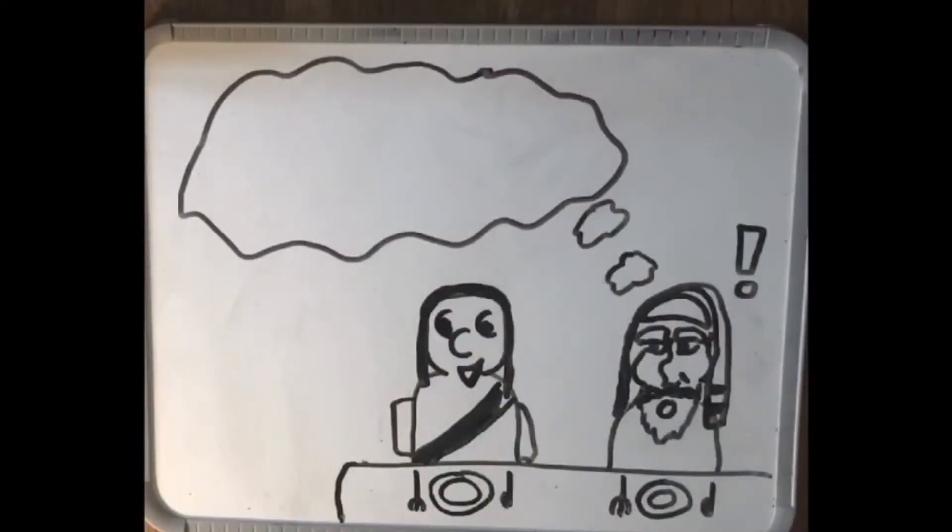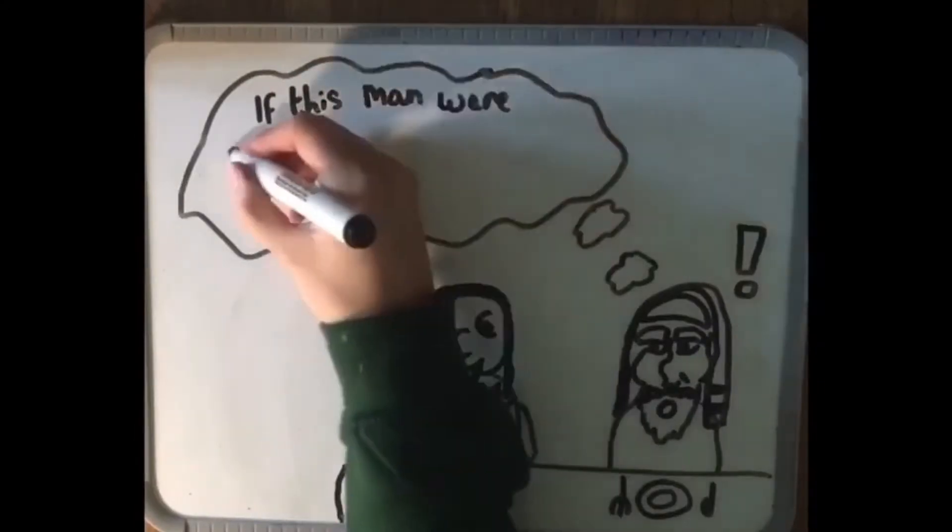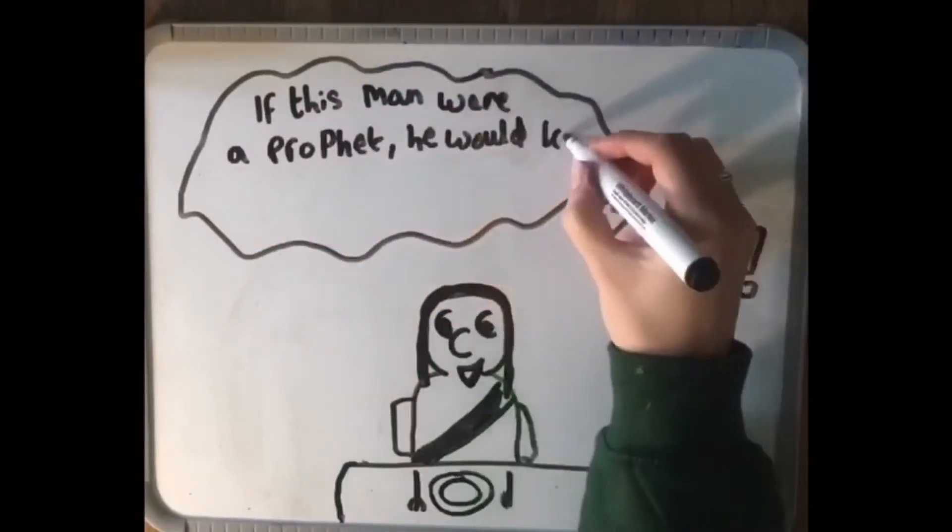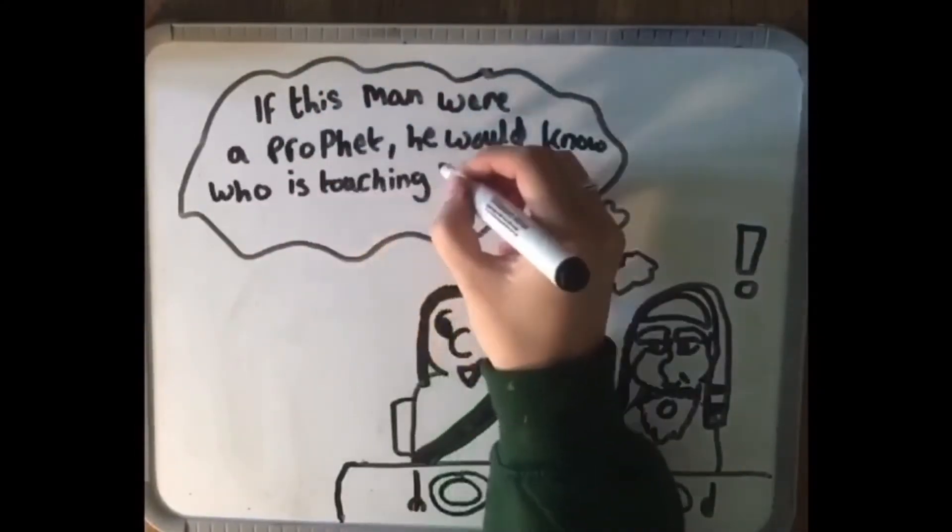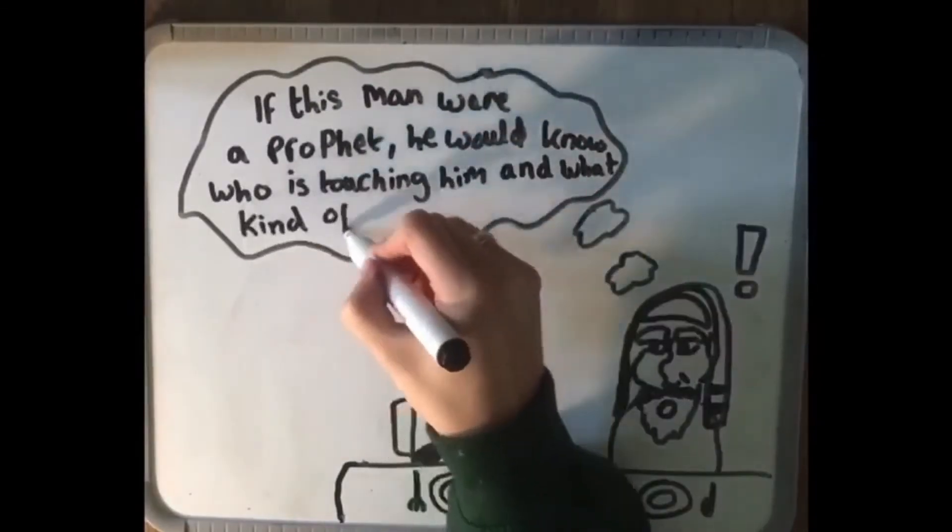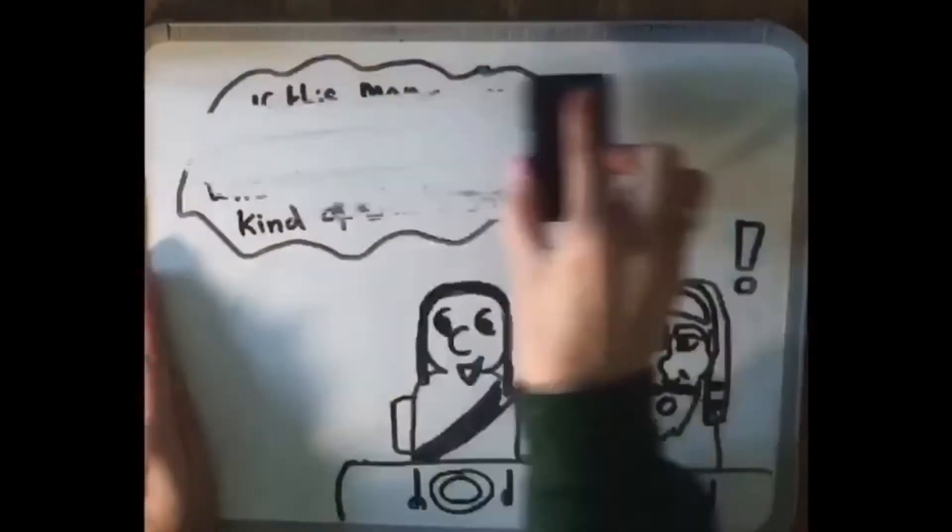When the Pharisee who had invited him saw this, he said to himself, If this man were a prophet, he would know who is touching him and what kind of woman she is, that she is a sinner.